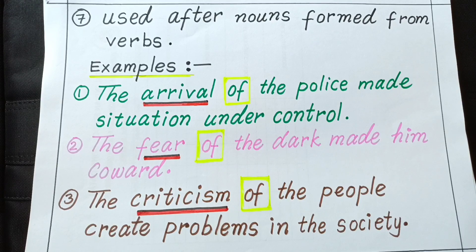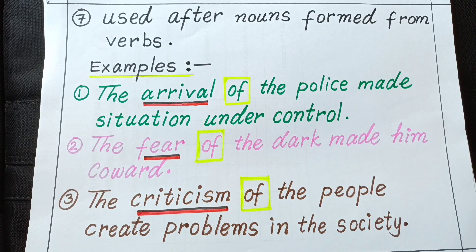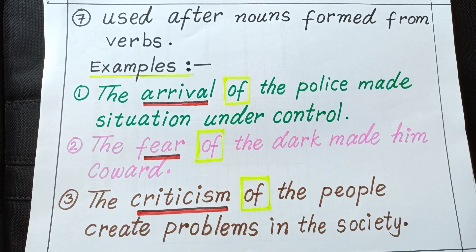We use preposition of after nouns which are formed from verbs. For example, the word 'arrival' is a noun form, whereas 'arrive' is a verb form — a word which shows action. So from the verb 'arrive', we can make the noun form 'arrival'.